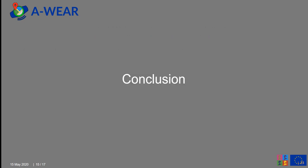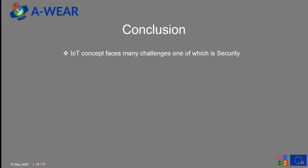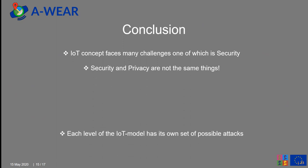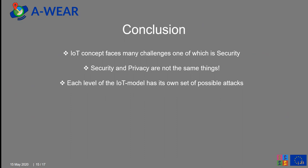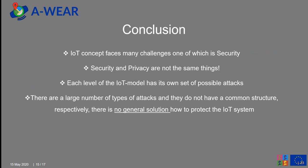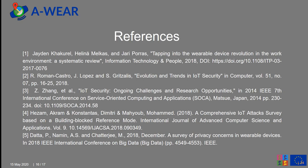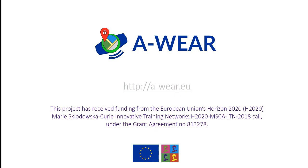So, finally, we can say that: the IoT concept faces many challenges, one of which is security; security and privacy are not the same things; each level of the IoT model has its own set of possible attacks; there are a large number of attack types and they do not share a common structure; and respectively, there is no general solution for how to protect an IoT system. But forewarned is forearmed. Here you can see the links. Thank you and stay secure.